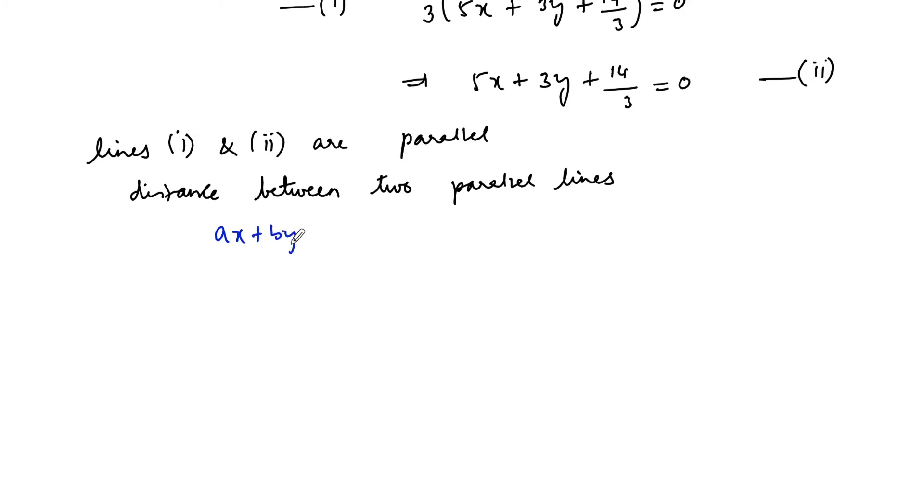AX plus BY plus C1 equals 0 and AX plus BY plus C2 equals 0 is given by mod of C1 minus C2 upon root over A square plus B square.